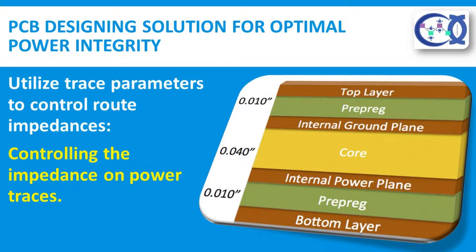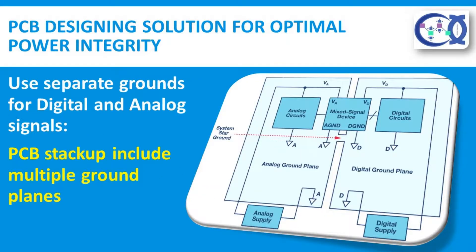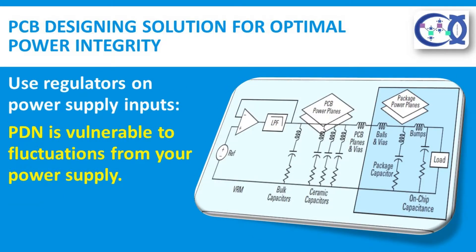Filters comprised of capacitors, inductors, and resistors should also be used to remove harmonics and quickly dampen frequency variations from switching circuitry. Utilize trace parameters to control route impedances. Controlling the impedance on power traces is critical. The best way to control impedances is by manipulating PCB trace width and copper thickness. Use separate grounds for digital and analog signals. Just as components and traces should be isolated according to signal type, so should your grounding. This may require that your PCB stack-up include multiple ground planes. Use regulators on power supply inputs. Your PDN is vulnerable to fluctuations from your power supply; you should utilize voltage or current regulators to minimize the ripple effect of these variations and stabilize the power to board components.